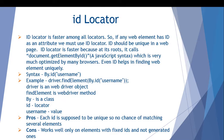The ID locator is the fastest among all locators. If any web element has an ID attribute, we must use the ID locator because it is unique. You should always go for ID first — no need to check any other locators in that case. ID should always be unique on a web page. ID locator is faster because it calls document.getElementById(), a JavaScript method that is highly optimized by many browsers.